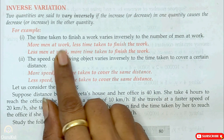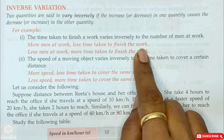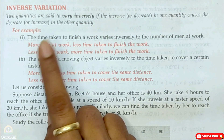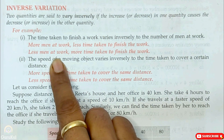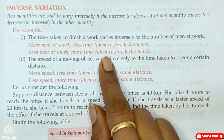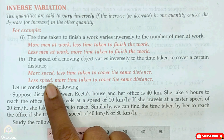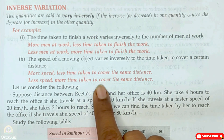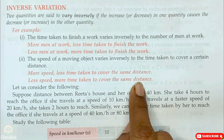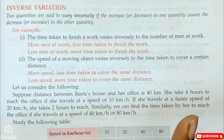For instance, more men at work means less time taken to complete the work. And if there are less men at work, more time will be taken to complete that particular work. Secondly, as much speed as you can drive, less time will be taken to cover the same distance. And if you do less speed, more time is taken to complete the same distance.